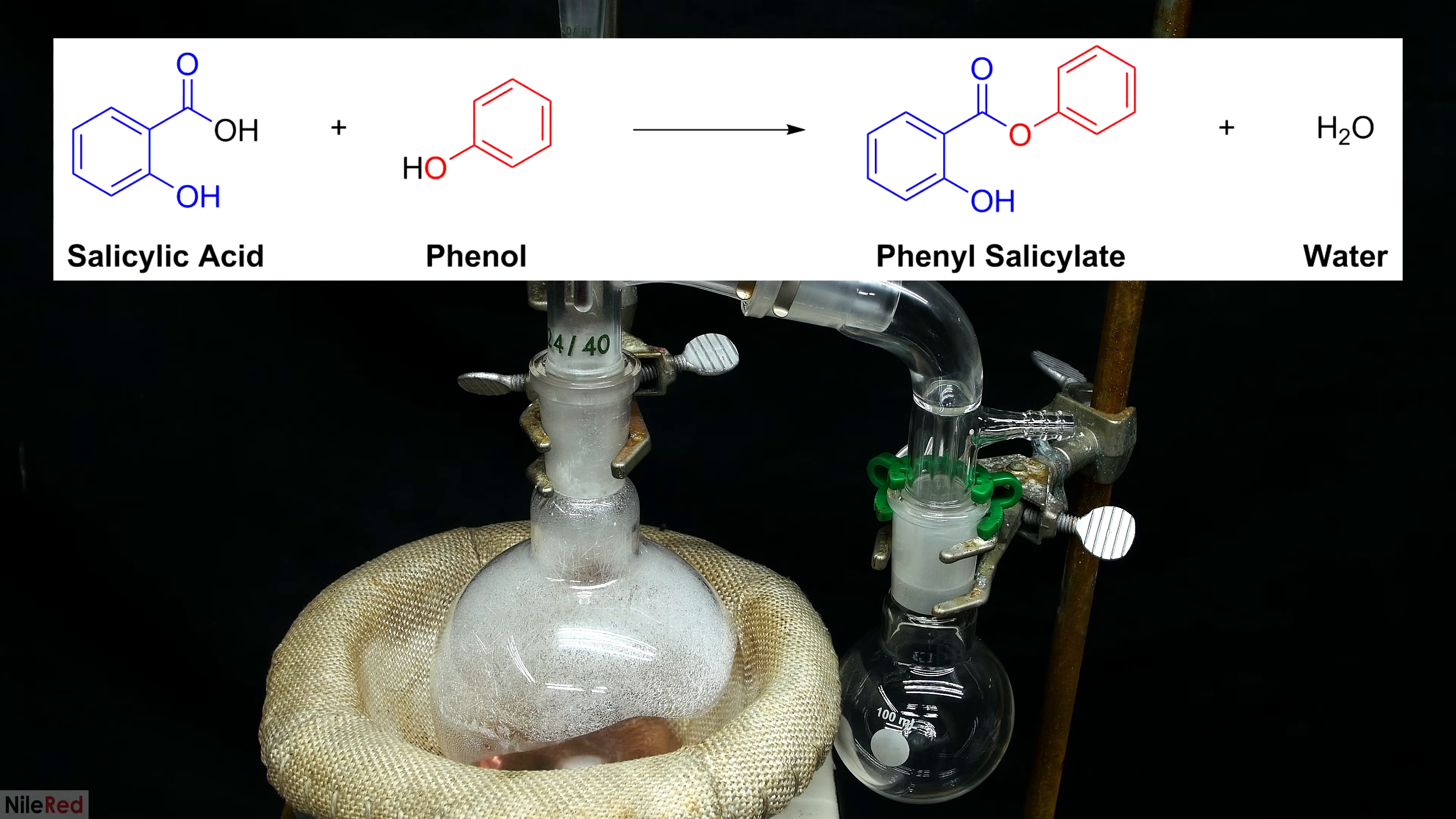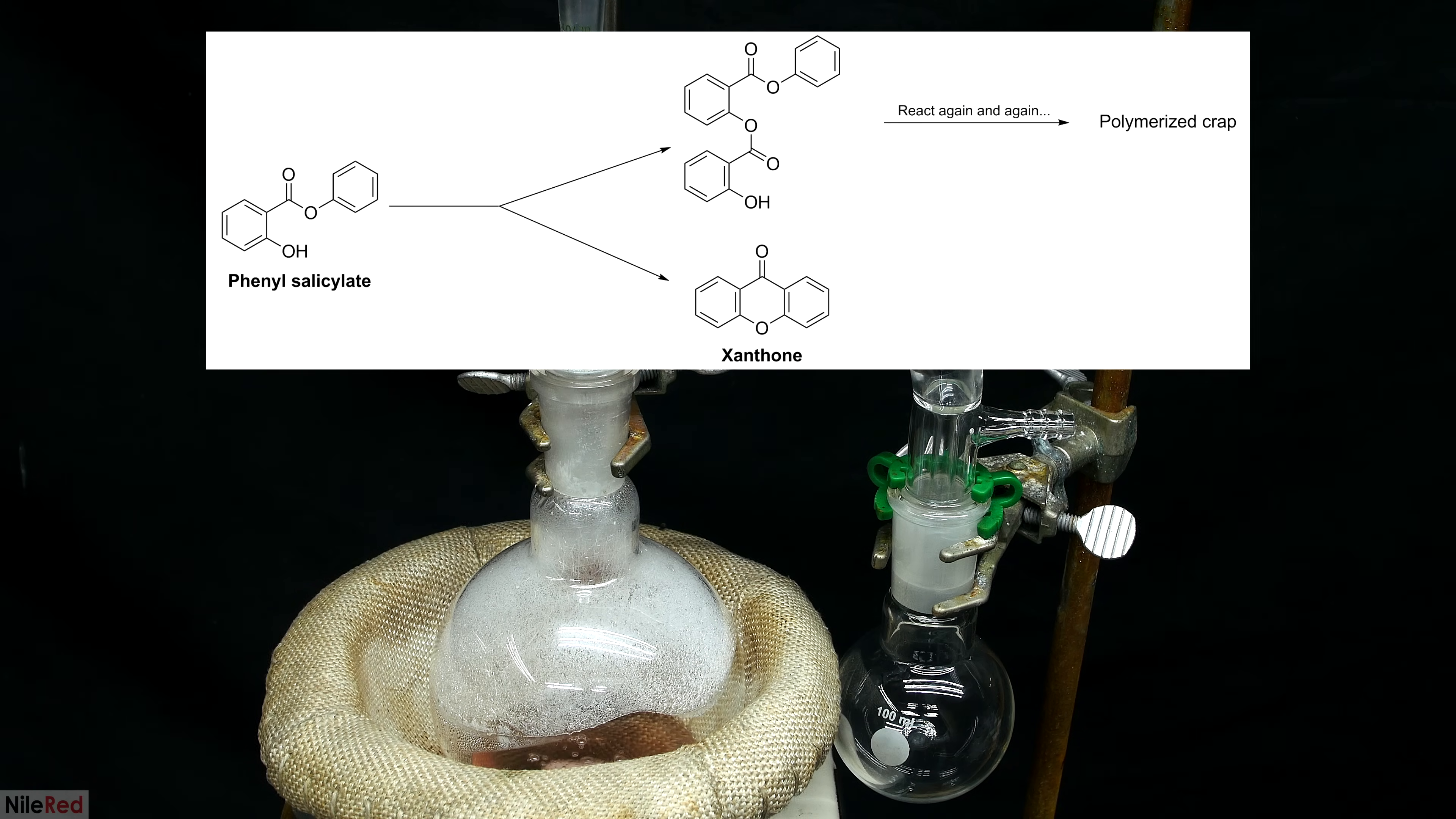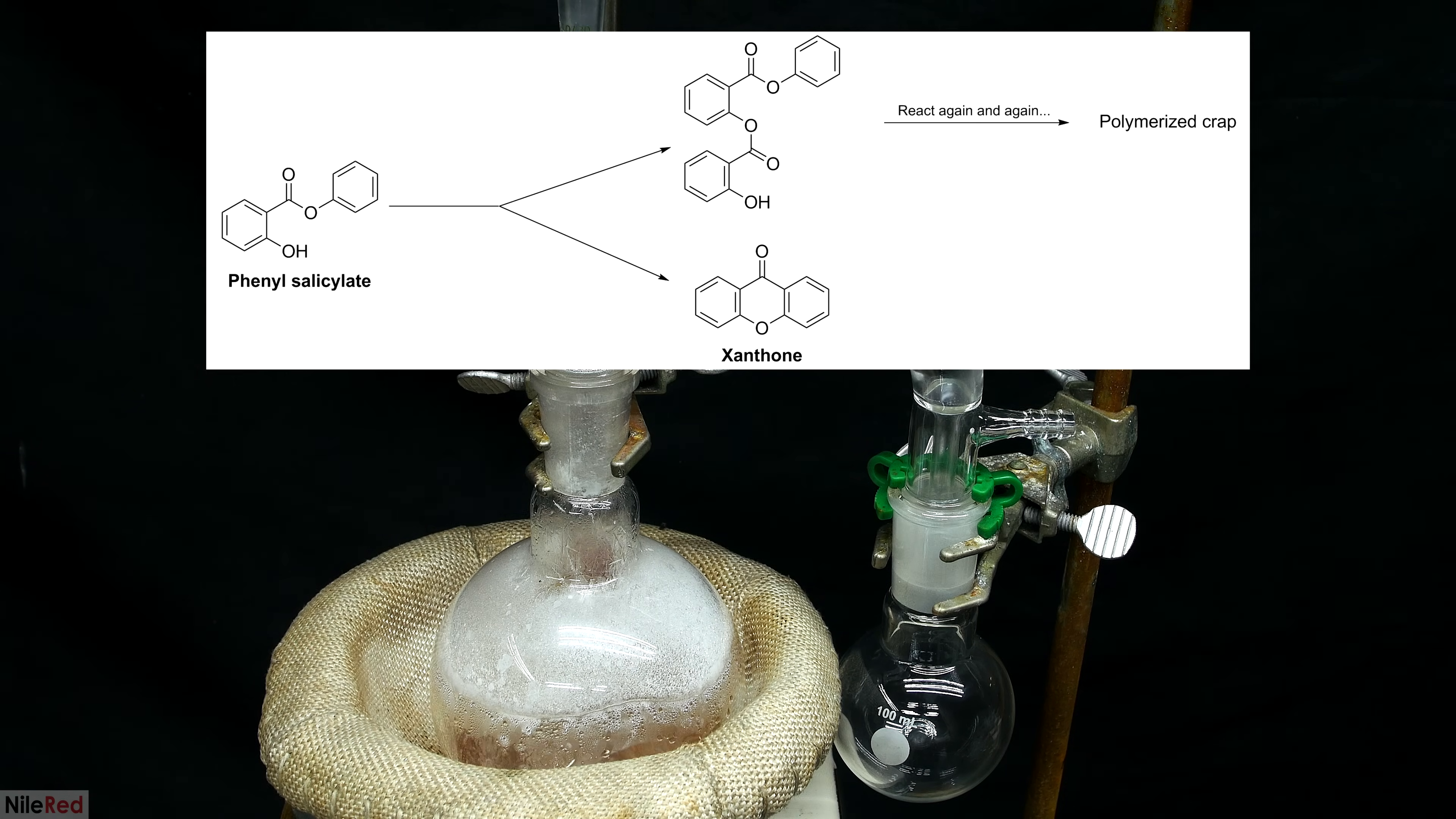One reason for loss of yield in this reaction is that phenol will actually react to a certain degree with salicylic acid. This type of reaction is known as an esterification reaction, and it'll form something called phenyl salicylate. The phenyl salicylate that forms can go on to react with more salicylic acid to make a very crappy polymer, or it can react with itself to form xanthone.